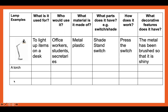For the next three rows, choose an item from the images on the slides. The first one is a torch. You're going to identify what a torch is used for, who would use the torch, what material the torch is made from, what parts the torch has, how the torch works, and what decorative features the torch has. Pause the screen and get this one done.